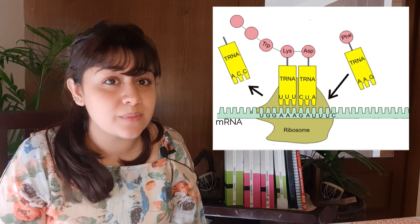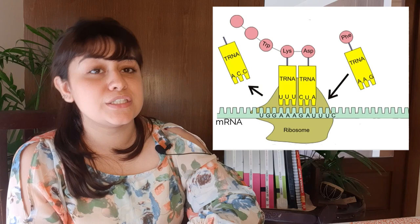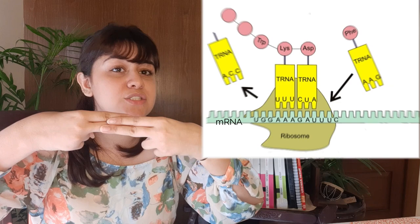This will happen again at the next place, determining the next amino acid. A peptide bond is formed between the two amino acids, joining them together. Remember that the DNA and RNA molecules are much longer than what they are shown here — this will continue on and on, and as a result thousands of amino acids join together making a protein.